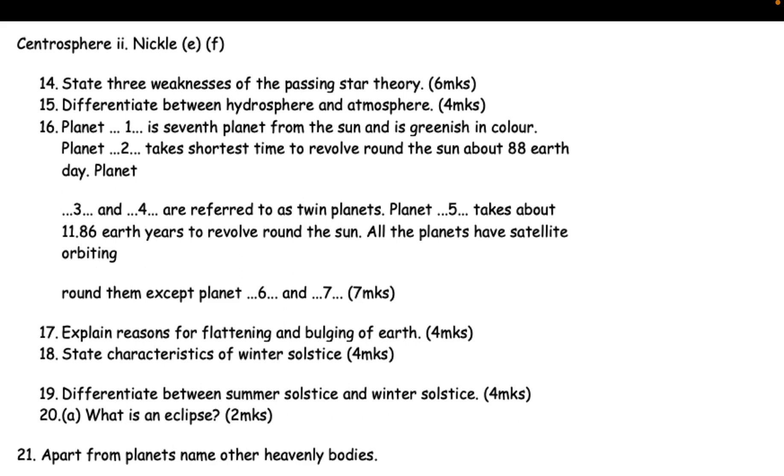16. Planet 1 is seventh planet from the sun and is greenish in color. Planet 2 takes shortest time to revolve round the sun, about 88 Earth days. Planet 3 and 4 are referred to as twin planets. Planet 5 takes about 11.86 Earth years to revolve round the sun. All the planets have satellites orbiting round them except planet 6 and 7 (7mks).